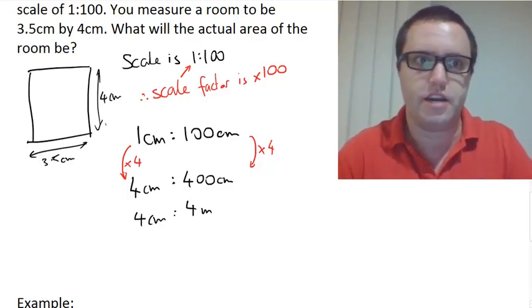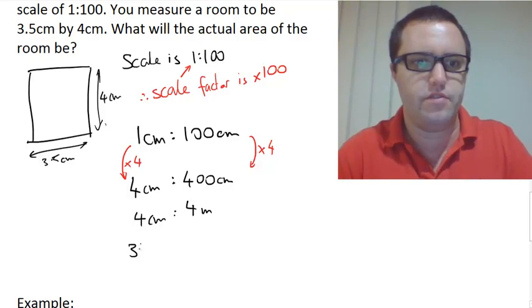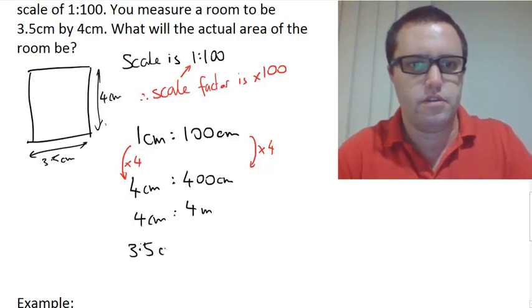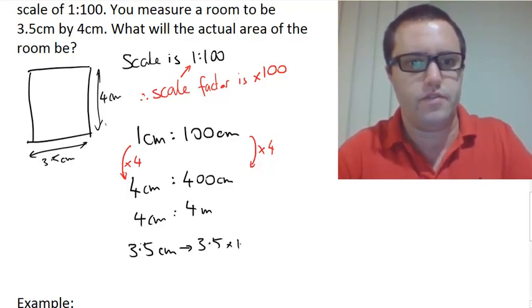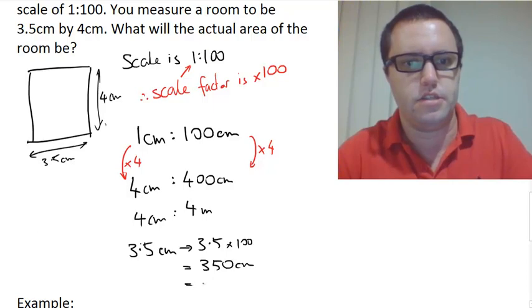Let's use our scale factor for this last one. 3.5 centimeters goes to 3.5 times 100, which is 350 centimeters, which is 3.5 meters.